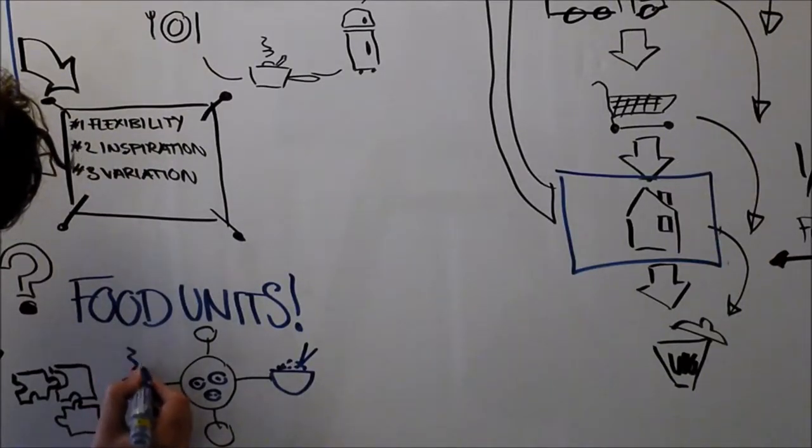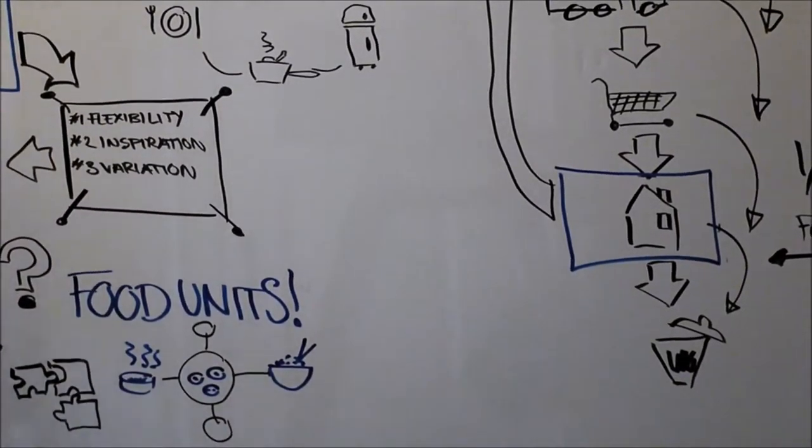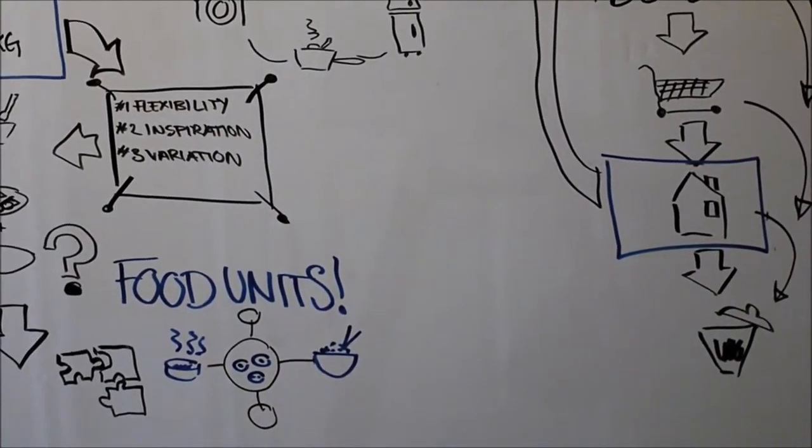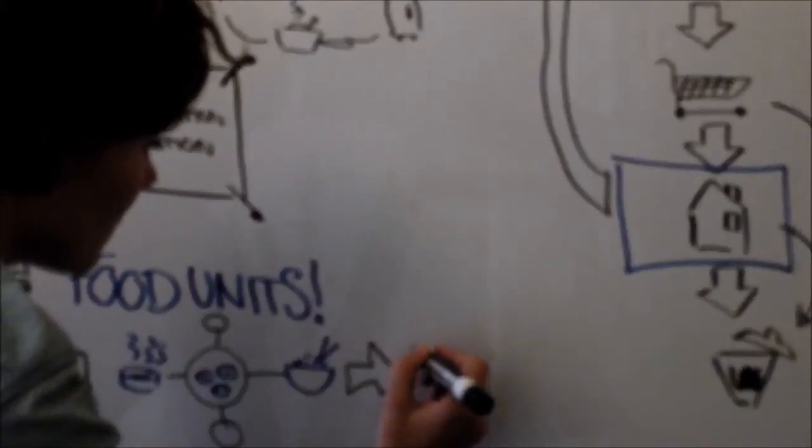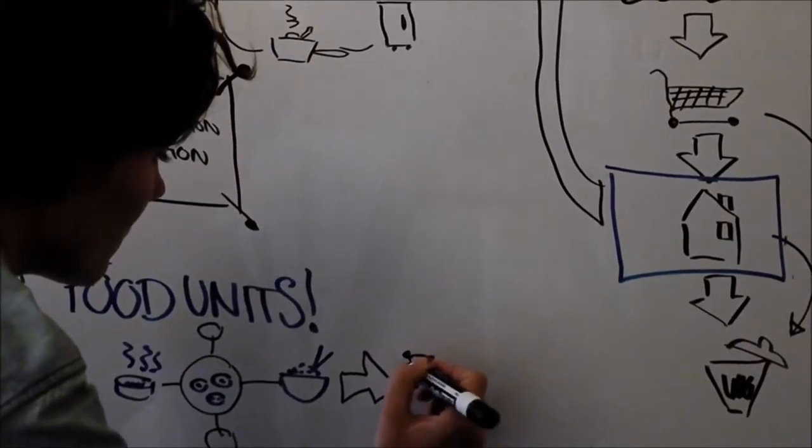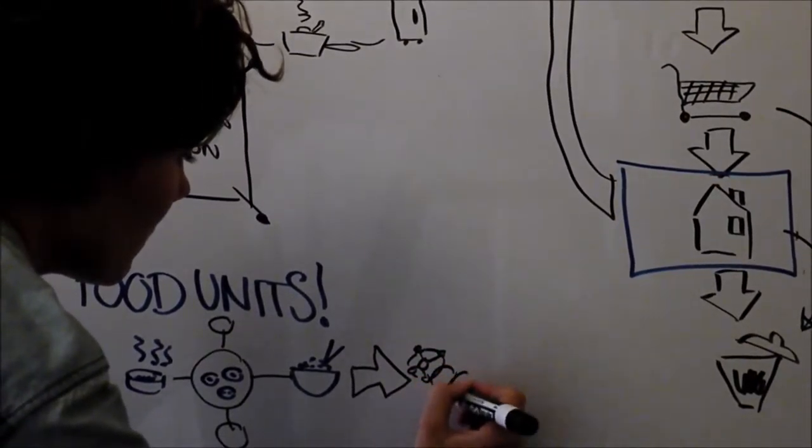What makes food units interesting is the way they are the defining element of how we think about meals, and in the end decide which meals we make. We're very comfortable inside our food units and it's difficult to change them entirely. It's easier to add new units to a food library than changing an existing one.